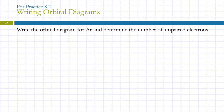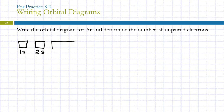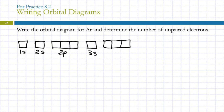Let's write the orbital diagram for argon and determine the number of unpaired electrons. Argon has 18 electrons. We need boxes for: one room on the first floor (1s), two rooms on the second floor (2s and 2p with three beds), and two rooms on the third floor (3s and 3p with three beds). We don't need the 3d room.